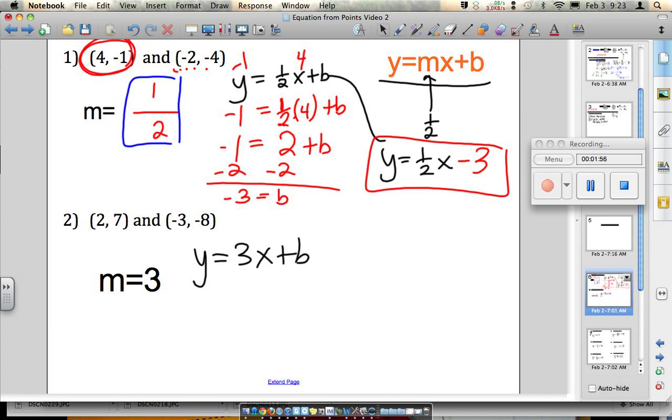The second thing we're going to plug in is the point that we know. I like to pick the one that has positive numbers because I think I'm faster with that. Seven equals three times two plus b.